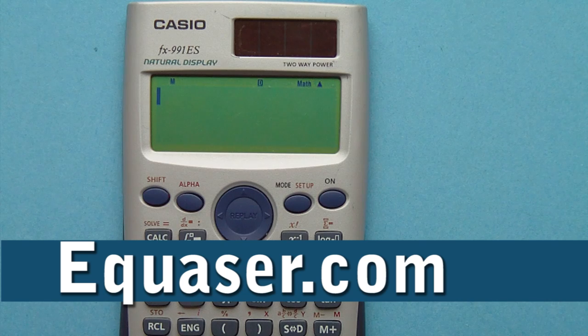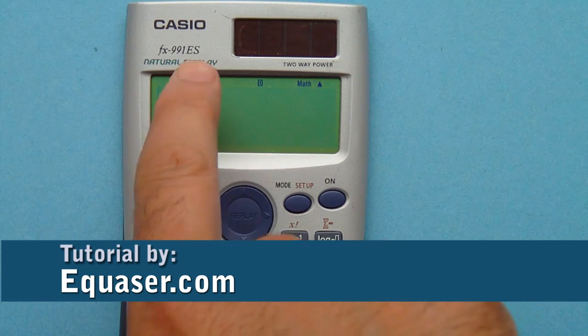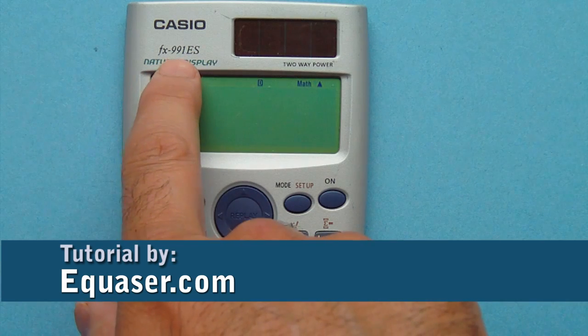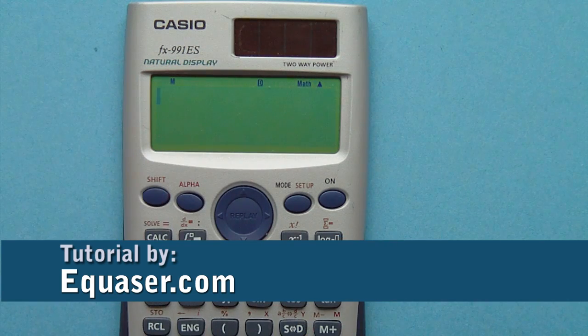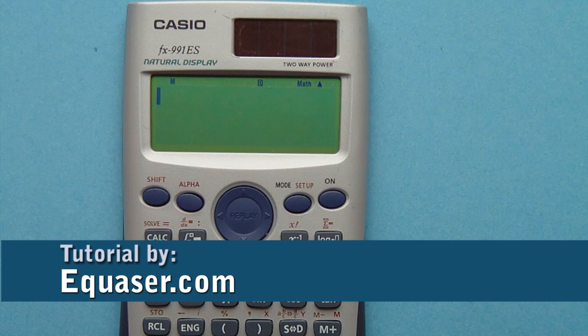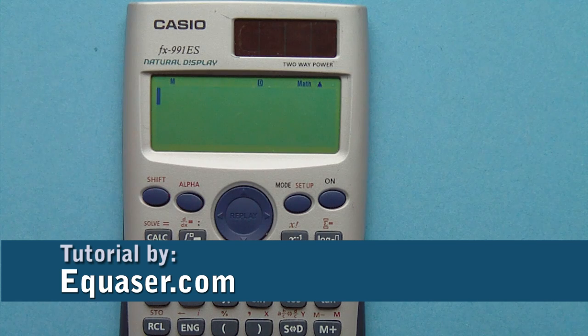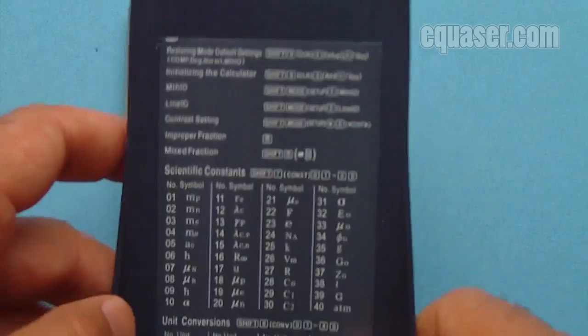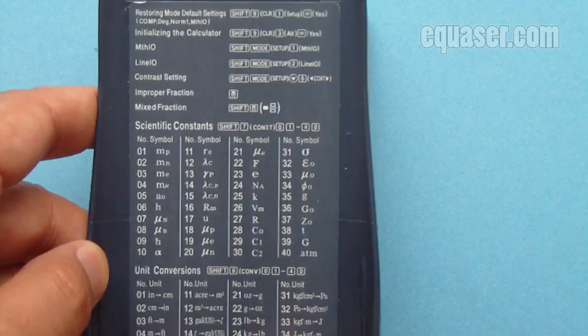Hello, welcome to a tutorial from Equasor.com. In this tutorial we are going to use the Casio FX991ES scientific calculator to convert centimeter to inch and inch to centimeter. At the cover of this calculator we have a sticker which tells us about this conversion and the process.